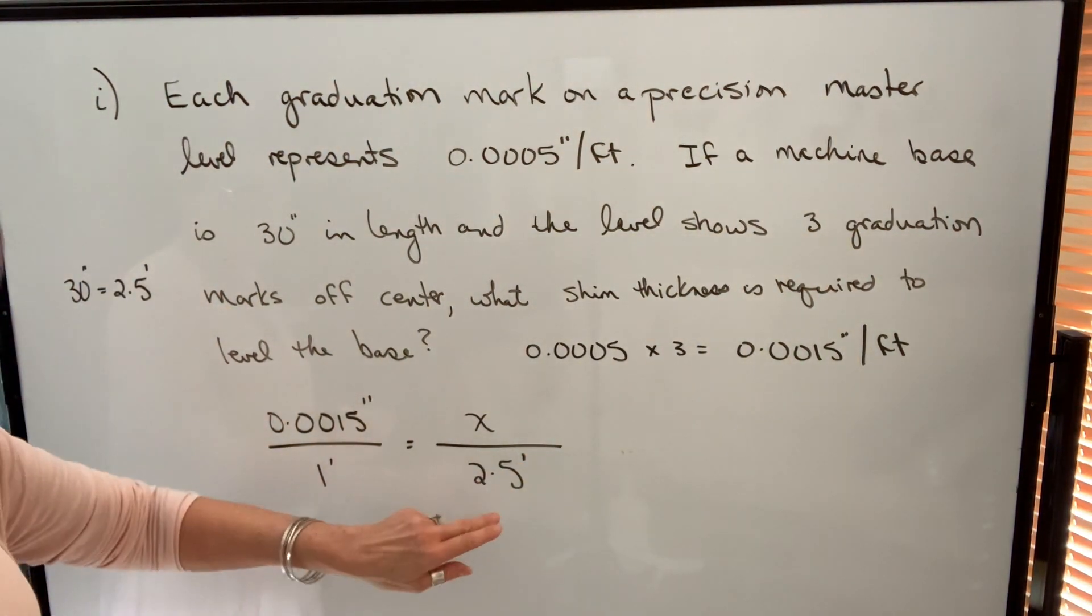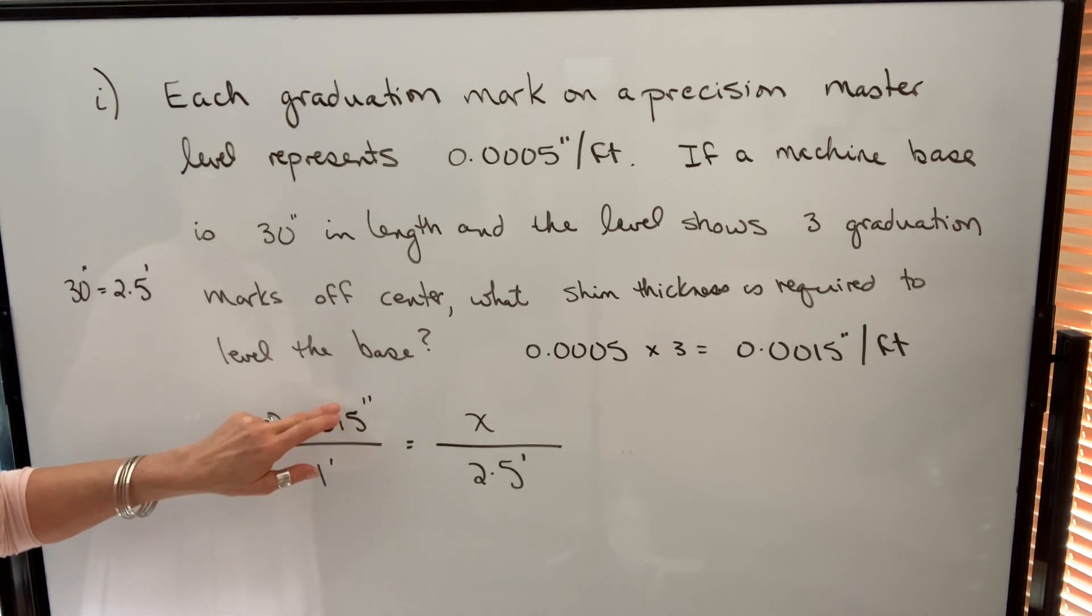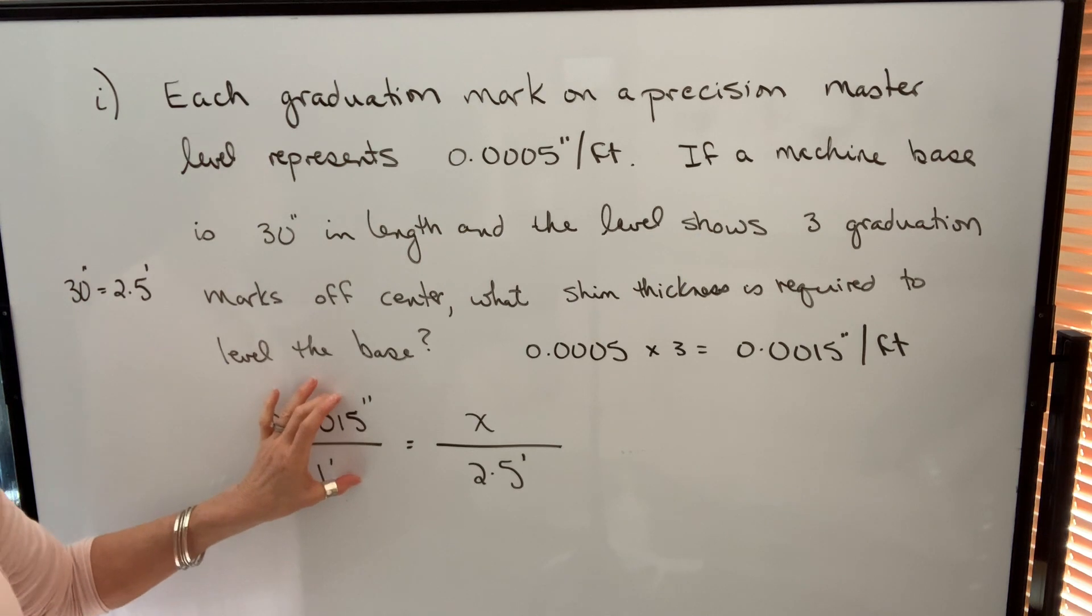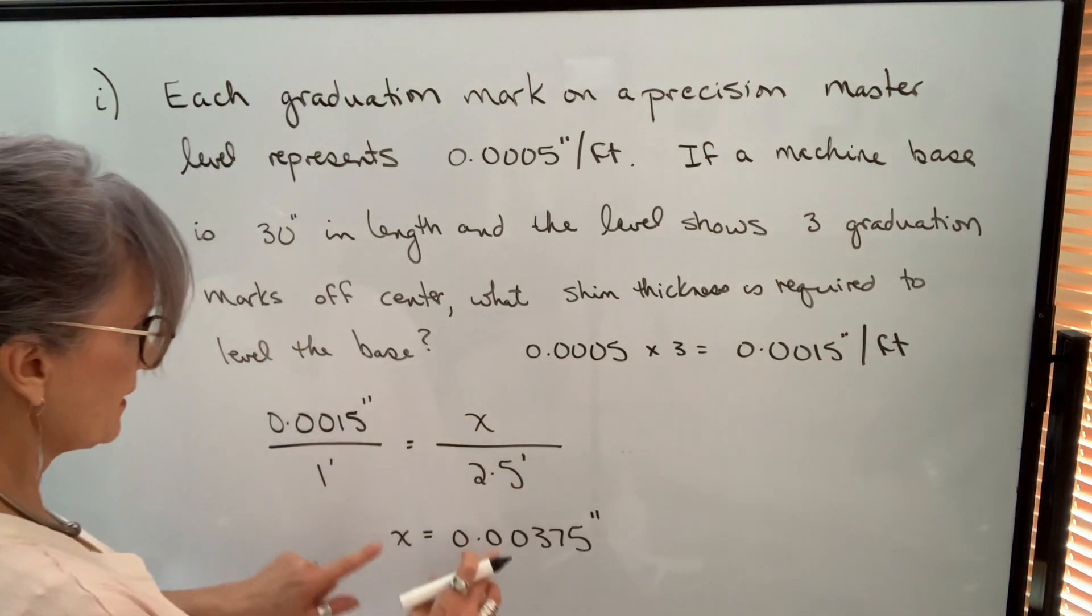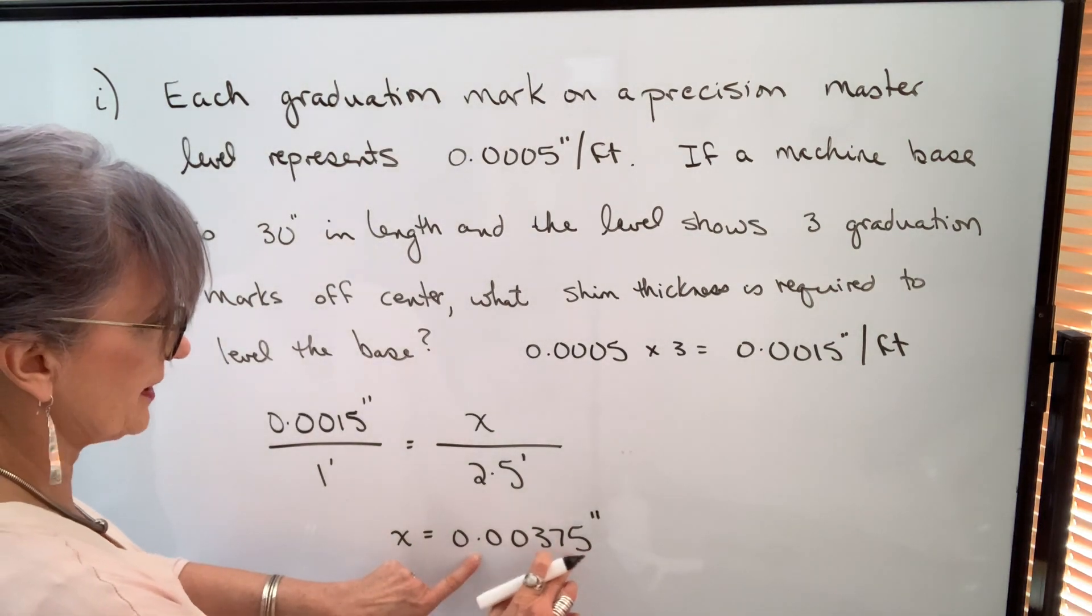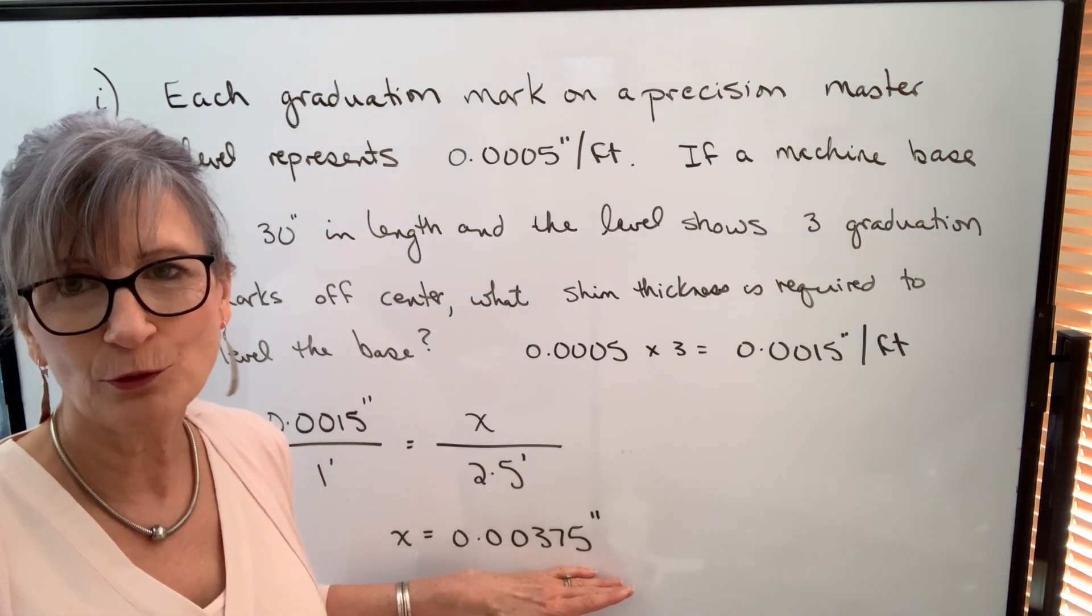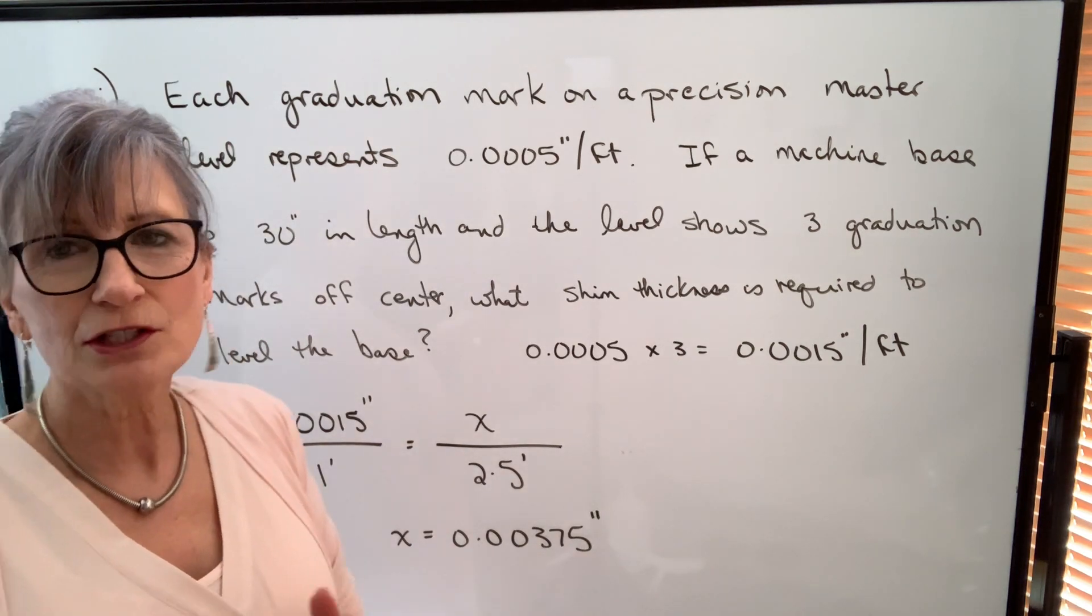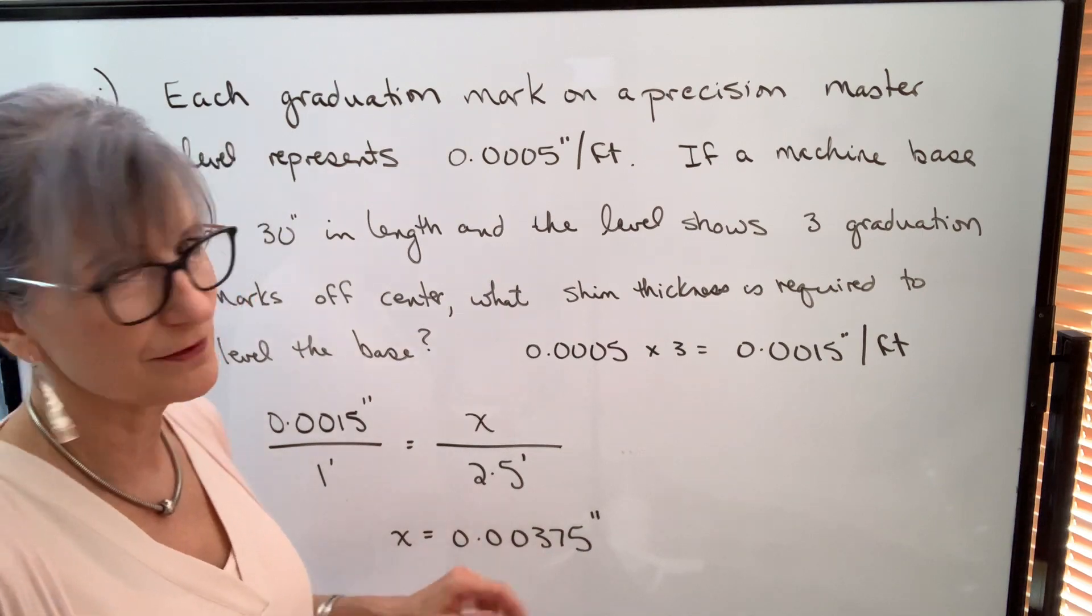You have to be consistent with the units for the denominator, as well as you need to have the same units in your numerator. These two units don't need to be the same, but these two do, and these two do. When we cross multiply, we get .00375. You probably are going to round that off, depending on what you have available for shims. If your smallest shim thickness is a thousandth of an inch, you could round this off to four thousandths of an inch.